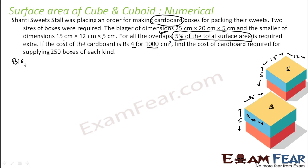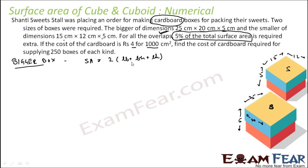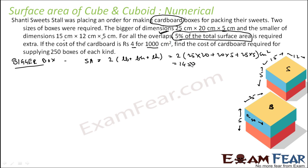First, let's take the big box. We need to find the surface area. Surface area = 2 × (length×breadth + breadth×height + length×height), because all 6 surfaces are to be covered — it is not open from the top. Putting in the values: 25×20, 20×5, and 25×5. All in centimetres, so the result is in centimetres square. We get 1450 cm².